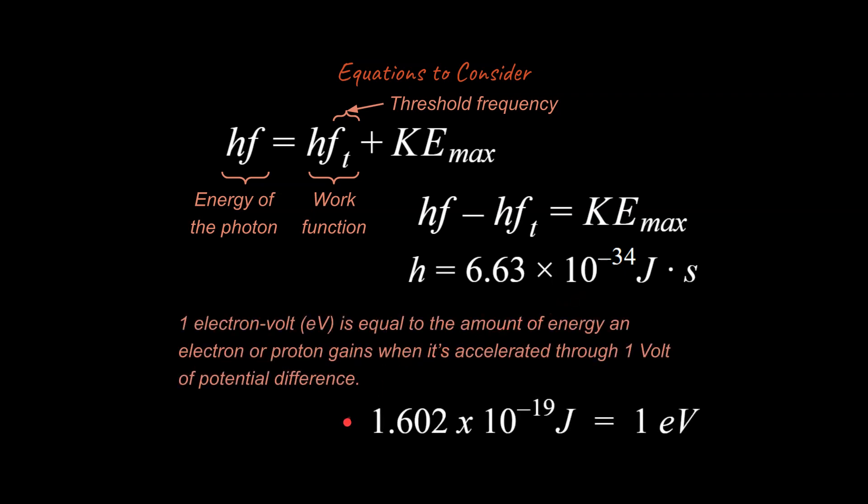I will mention that there is another unit that we need to be aware of. It's called an electron volt. So an electron volt is equal to the amount of energy an electron or proton gains when it's accelerated through one volt of potential difference. Alright, so let's see how this works out with an example problem.